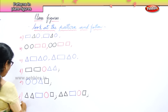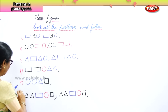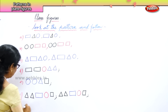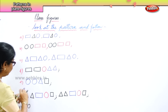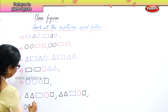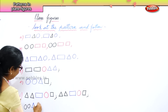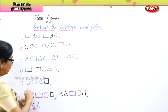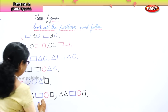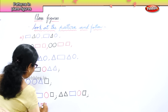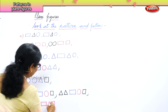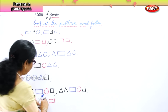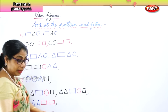Finally we will do one more. We have circle, circle, triangle, triangle and then we have rectangle, rectangle — and what we need to do? We need to follow the pattern.